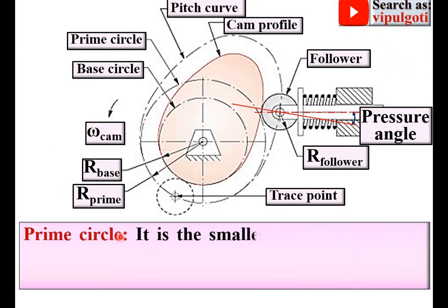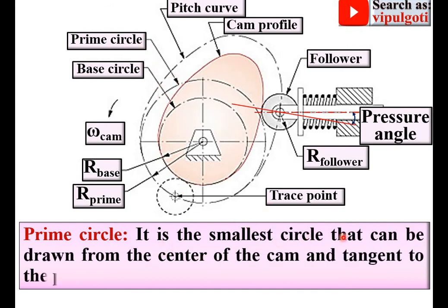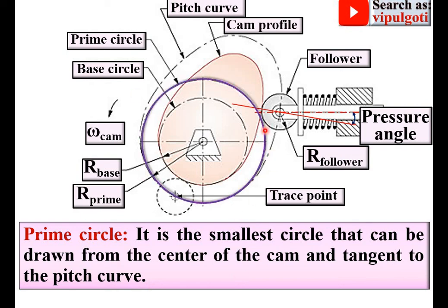Next: prime circle. It is the smallest circle that can be drawn from the center of the cam and tangent to the pitch curve. This circle is known as the prime circle, which is tangent to the pitch curve.